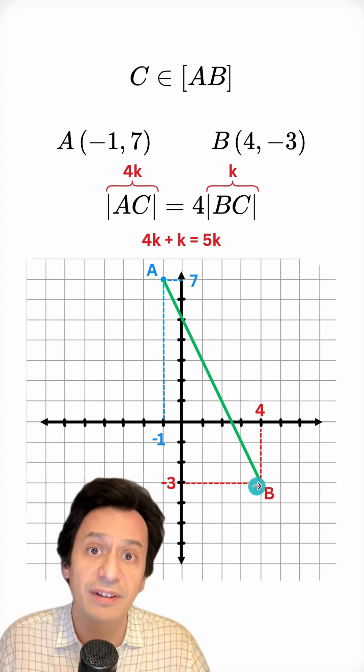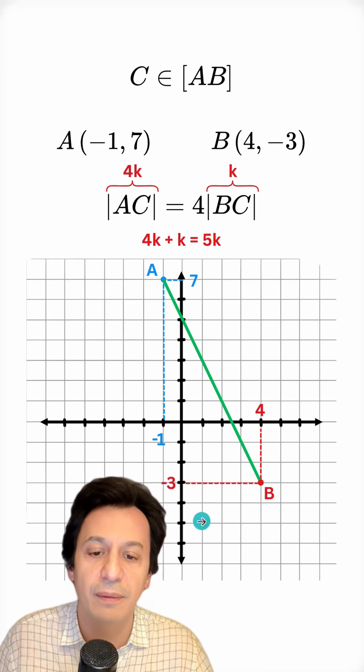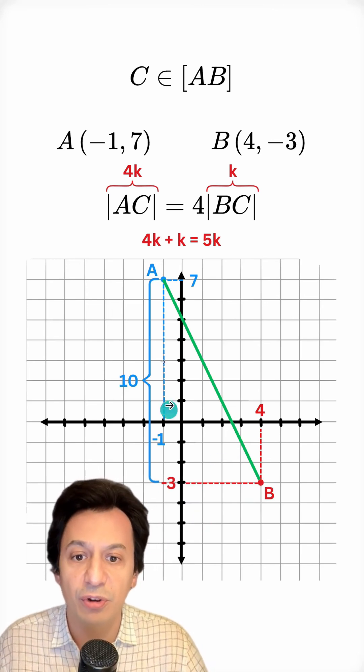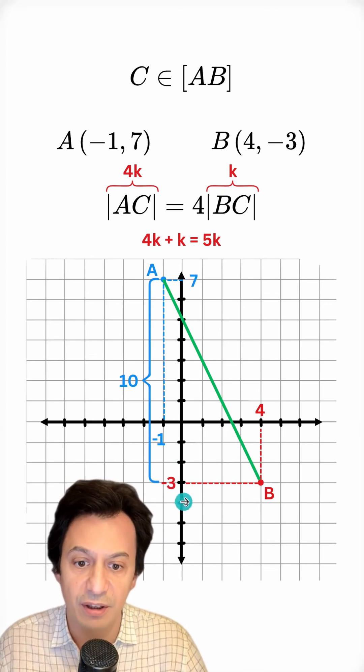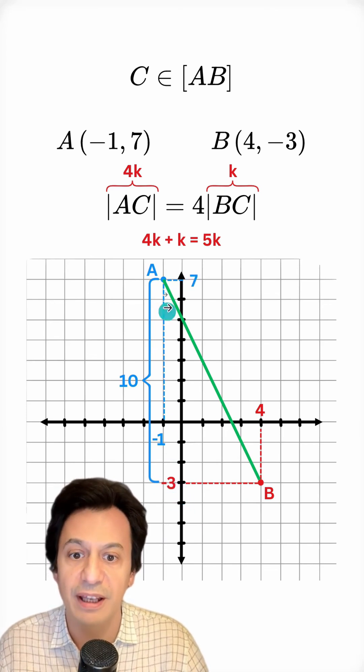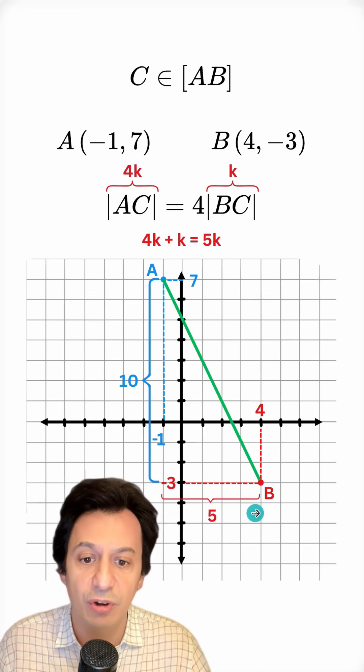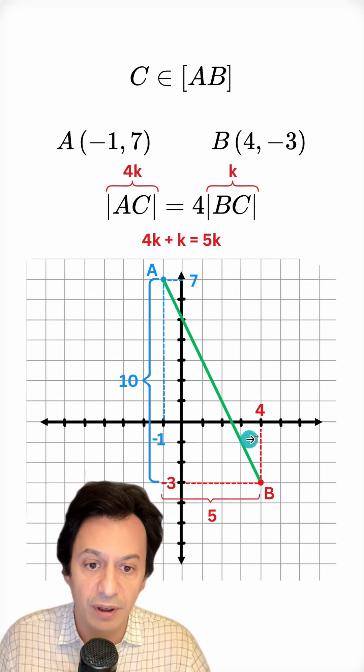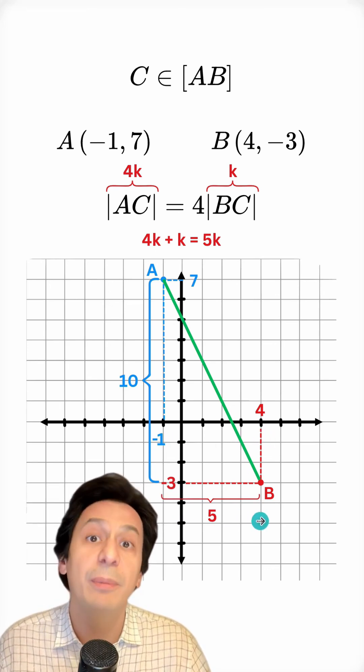To do this, we will use something other than this line segment. Let's look at its horizontal and vertical components. Now I'm first calculating the length of the vertical component of the line segment AB. Look, here we have 7 and here we have negative 3. So the length of the vertical component here is 10. Let's also look at the horizontal component. Here we have negative 1 and here we have 4. When we look at the distance between the two, this part is also 5.